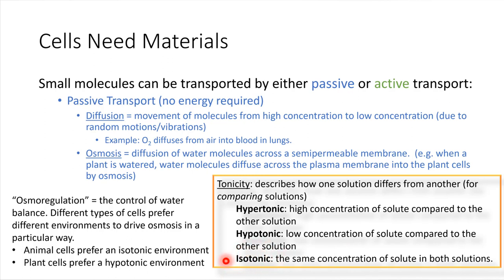So how does this all tie back to osmosis — the movement of water? If you have two solutions, like sugary water and plain water, and you put them in contact with each other with a thin membrane between them that water can cross, water will always flow into the hypertonic solution. Water is going to want to go to where there's a lot of dissolved sugar or salt. These words help us make predictions about which direction water is going to flow in the process of osmosis.